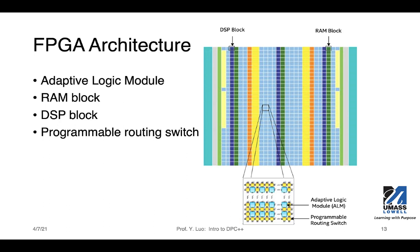The picture here uses colors to visualize the available resources in FPGA. As you can see, there are different kinds of resources available, located in different parts of the chip. As a result, there is a need to use programmable routing switches to connect them by passing signals to and from. Depending on how you organize your resources, you may incur different delays from one point to another, and that may affect the latency of your circuit.